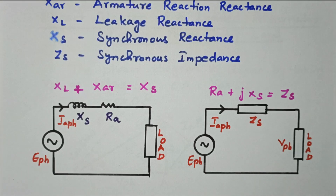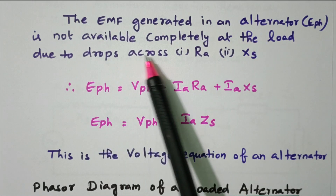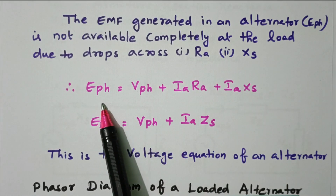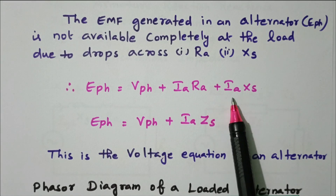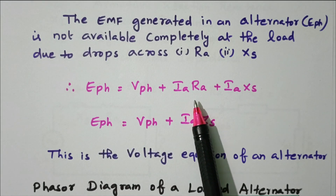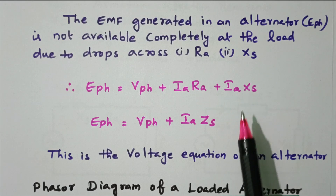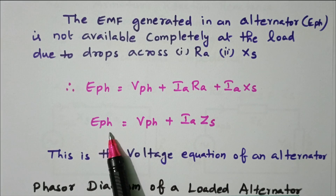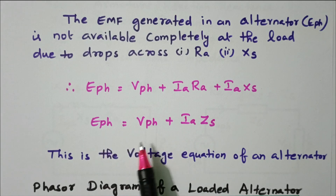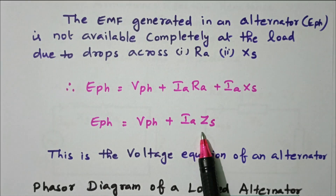Now we will see the voltage equation. The EMF generated in the alternator is not available completely at the load, due to the drop across RA and XS. So E_phase equals V_phase plus IA·RA plus IA·XS. IA·RA is the armature resistance drop, and IA·XS is the armature reactance drop. Since RA plus XS can be written as ZS, E_phase is the vector sum of V_phase and IA·ZS. In the phasor diagram we are going to prove this equation: the generated EMF equals the EMF available at the load terminal plus the drop in the armature circuit.